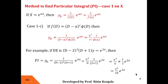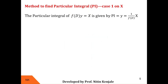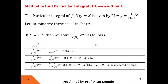This completes all the cases. Now let us put all these results in a chart. The value of 1/f(D) of e^(ax) can be obtained by simply replacing every D in f by a, giving 1/f(a) e^(ax), provided f(a) ≠ 0. But if f(D) contains a factor (D - a), then f(a) becomes 0, and we eliminate that factor and replace it by x. If the factor (D - a) appears r times, we eliminate (D - a)^r and replace it by x^r / r!, giving yp = x^r / r! times 1/φ(a) times e^(ax).